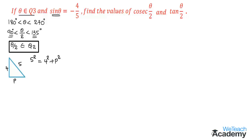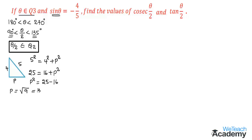From 5 squared equals 4 squared plus p squared, we get 25 equals 16 plus p squared. Transferring 16 to the left hand side gives p squared equals 25 minus 16, so p equals the square root of 25 minus 16, which is the square root of 9. Since the square root of 9 is 3, the adjacent side p equals 3.